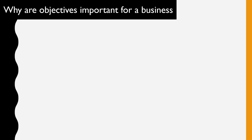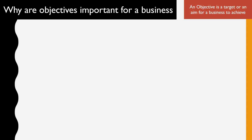Now let's look at the importance of setting objectives, but first let's define what an objective is. Based on the example of reaching a goal — getting an A in business studies — a general definition for an objective would be a target or an aim that you set. In the context of a business, an objective would mean a target or an aim that a business sets to achieve.